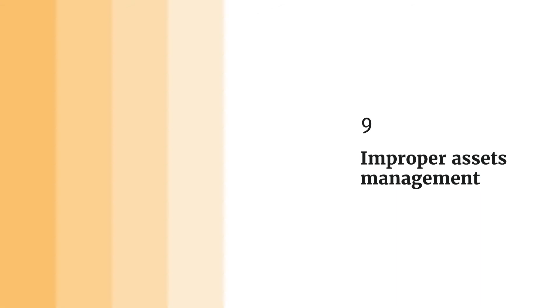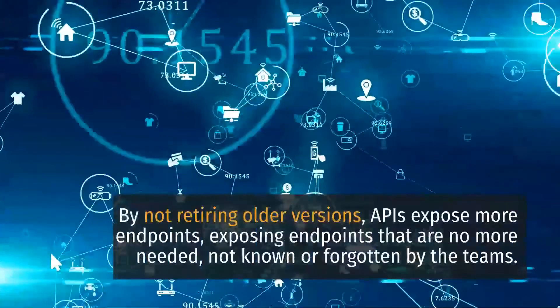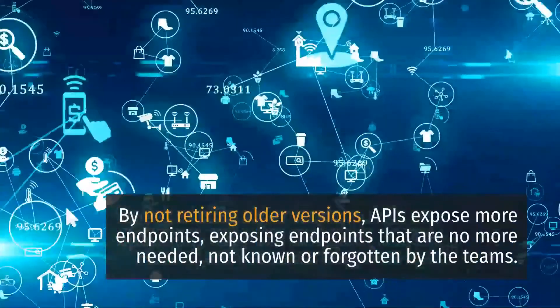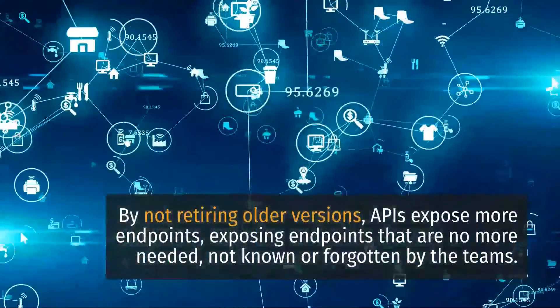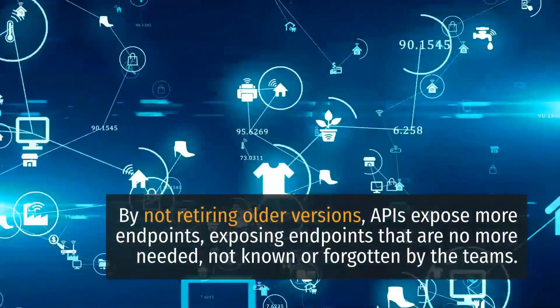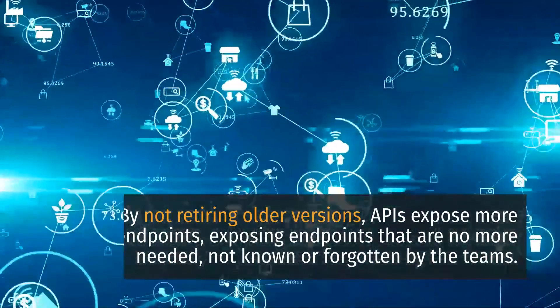9. Improper Assets Management. By not retiring older versions, APIs expose more endpoints — endpoints that are no longer needed, not known, or forgotten by the teams.